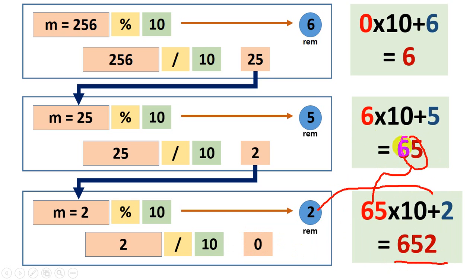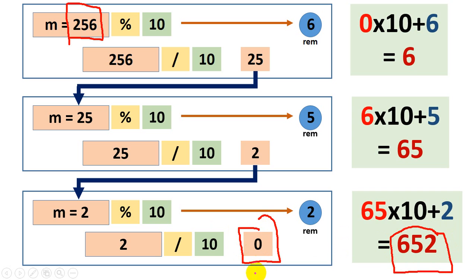Now you can notice one thing that the value of m is 256 and the value of reverse is 652. We can stop here because the value of m now reached 0. So you don't have to continue next step. I'm going to explain the same process that we have seen here in the presentation in the code and we'll try to understand it more clearly.